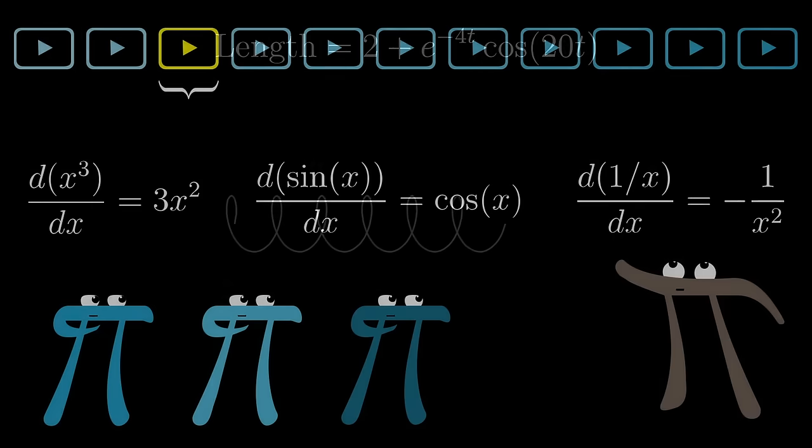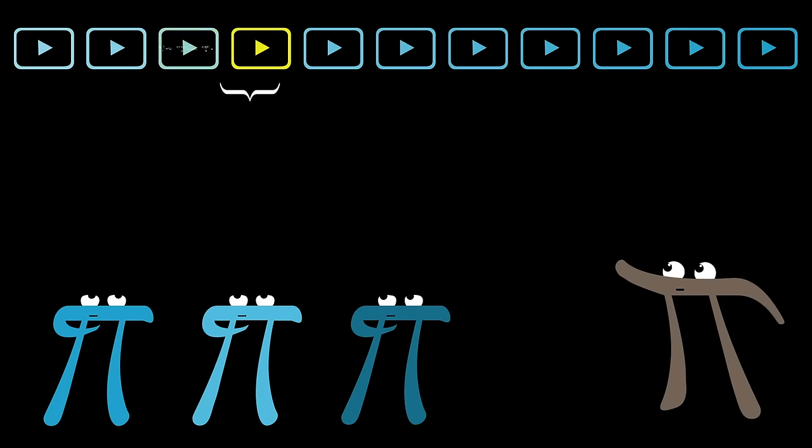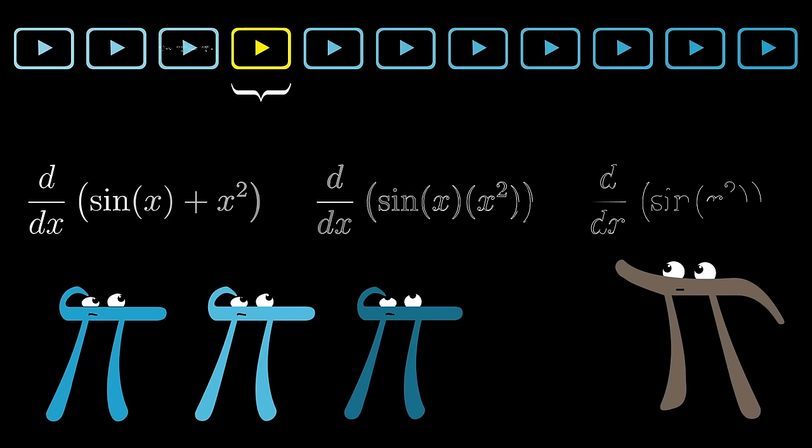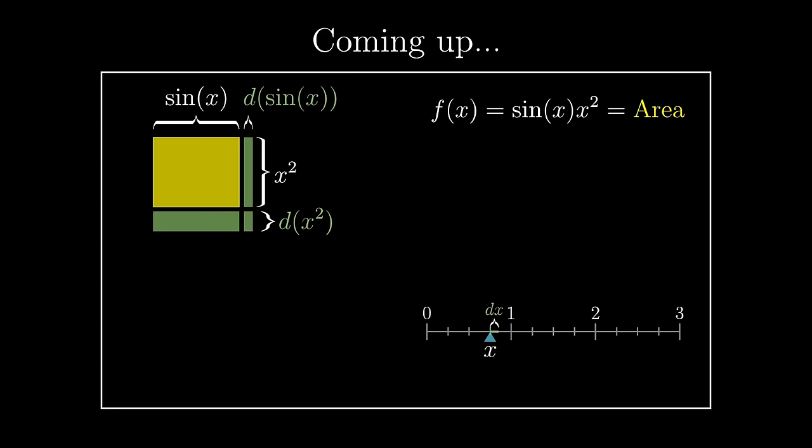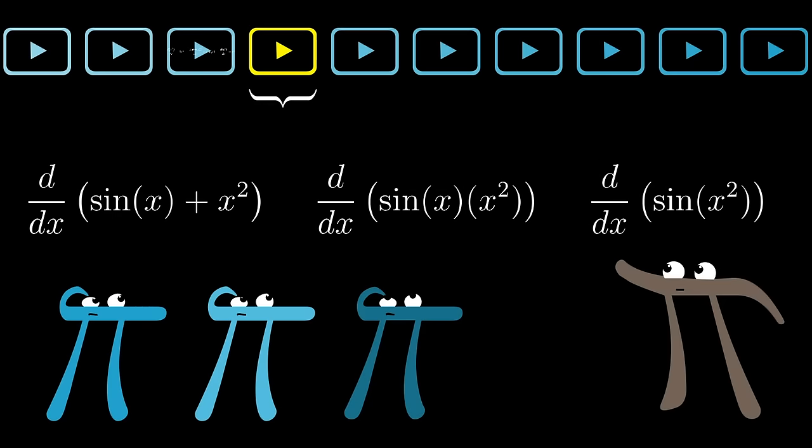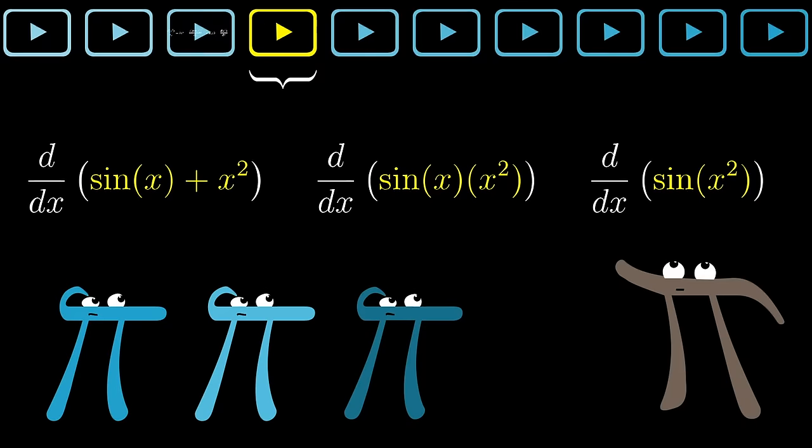So our natural next step is to understand how you take derivatives of more complicated combinations. And again, I don't want these to be something to memorize. I want you to have a clear picture in mind for where each one comes from. Now this really boils down into three basic ways to combine functions: you can add them together, you can multiply them, and you can throw one inside the other, known as composing them.